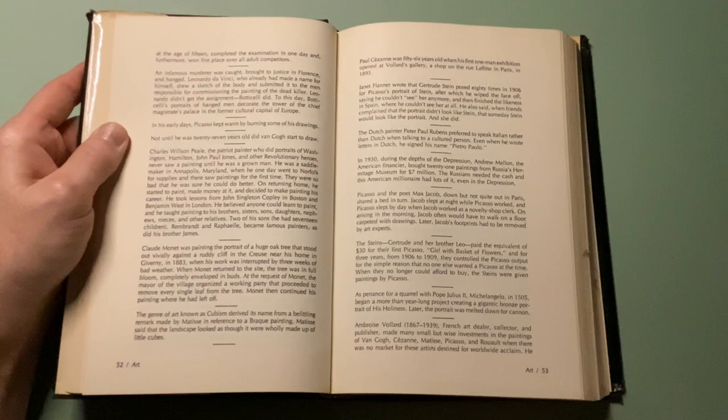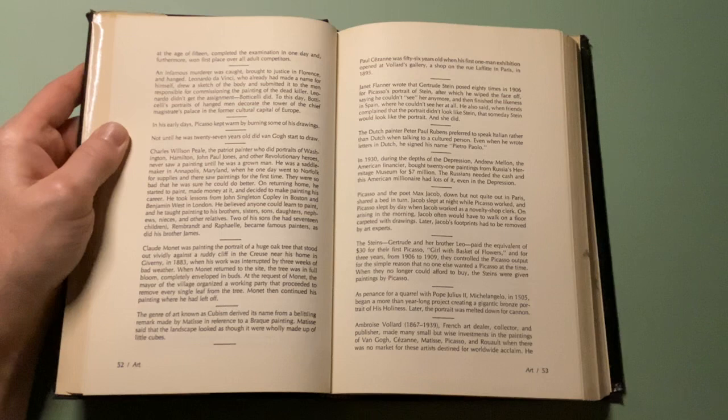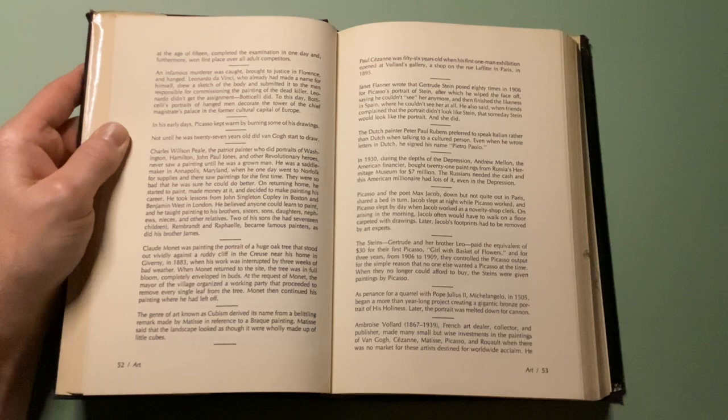An infamous murderer who was caught, brought to justice in Florence and hanged. Leonardo da Vinci, who already had made a name for himself, drew a sketch of the body and submitted it to the men responsible for commissioning the painting of the dead killer. Leonardo didn't get the assignment. To this day, the portrait of the hanged man decorates the tower of the chief magistrate's palace in the former cultural capital of Europe.